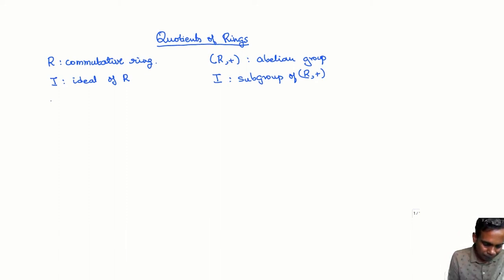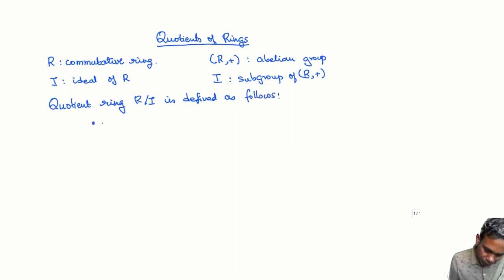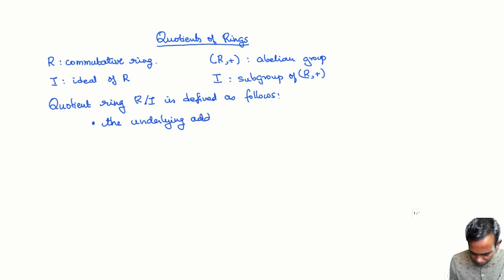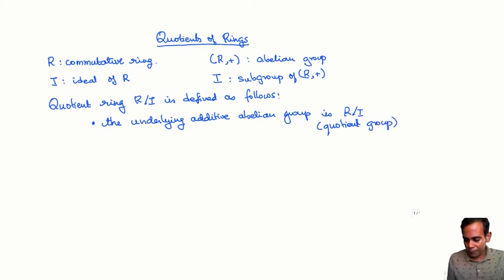Since I is a subgroup of R and R+ is an abelian group, I is obviously a normal subgroup — every subgroup of an abelian group is normal. So the quotient ring is defined as follows: the underlying additive abelian group is just the quotient group R mod I. Its elements are cosets of I; left cosets and right cosets are the same.